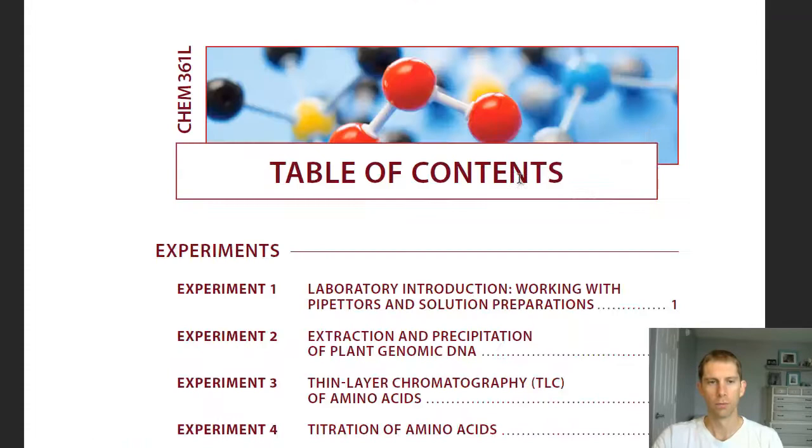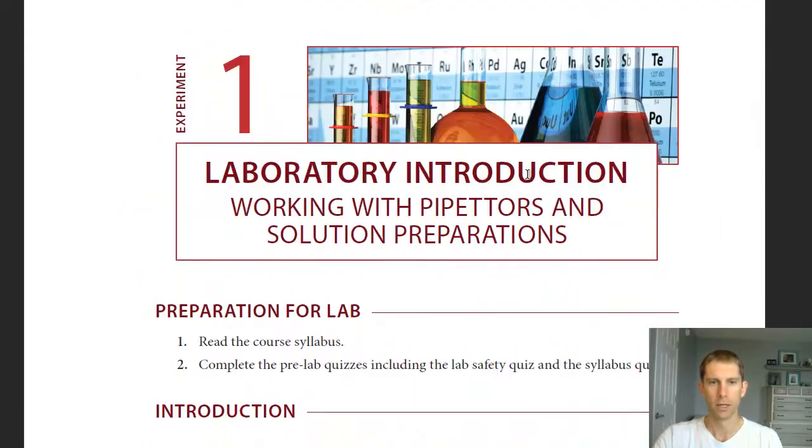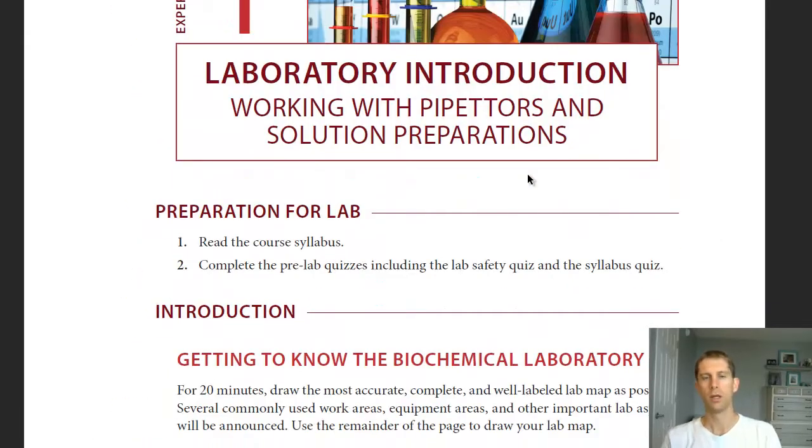Within this workbook, if we turn the pages down to Experiment 1, the first thing that you're going to do is draw a map of the biochem laboratory. I'm going to switch to a video where I've hired a crazy scientist to show you the lab. That will make it possible for you to go ahead and draw this lab map.